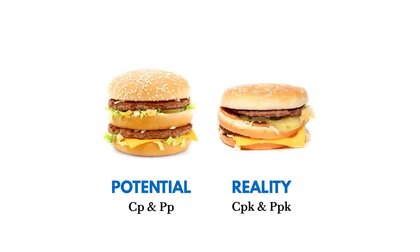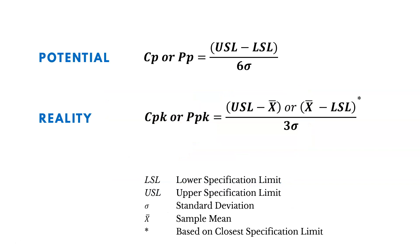Here's another way of thinking about it: the potential for your burger is your CP and PP — this is what it could be — but oftentimes your reality is your CPK and PPK. For CP or PP, we take the upper specification limit, subtract the lower specification limit, and divide by six sigma — six standard deviations.